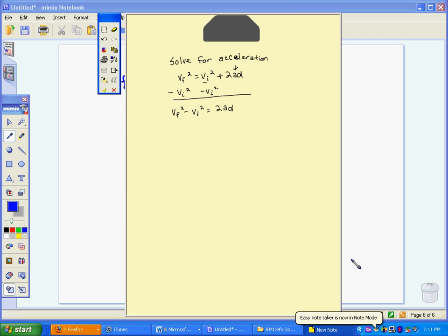Now, remember, you may not combine vf squared minus vi squared and just say vf minus vi squared. Remember, you cannot do that. You will not get the same answer. So it must stay in this form, vf squared minus vi squared.